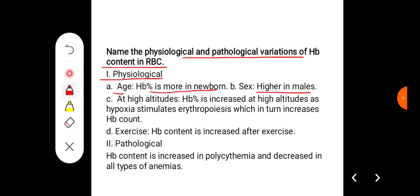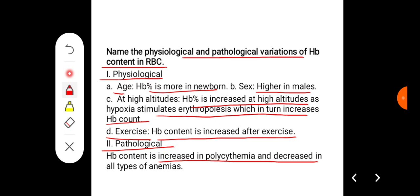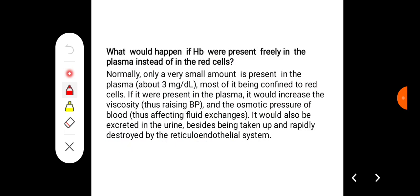In high altitudes, hemoglobin is increased as hypoxia stimulates erythropoiesis, which in turn increases hemoglobin concentration. After exercise, hemoglobin content increases. Some of the pathological causes: hemoglobin content is increased in polycythemia and decreased in all types of anemia.